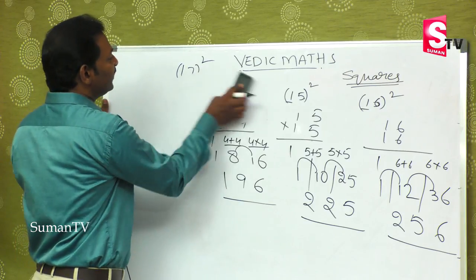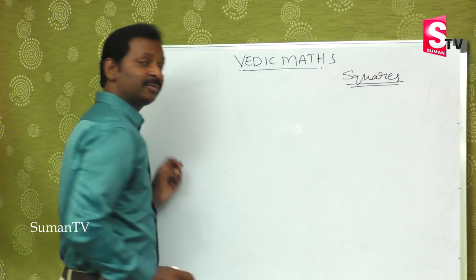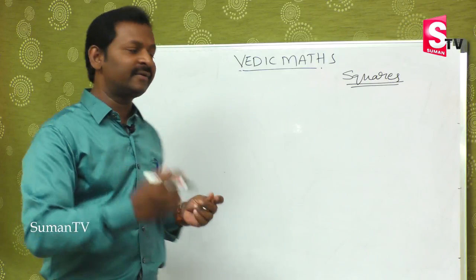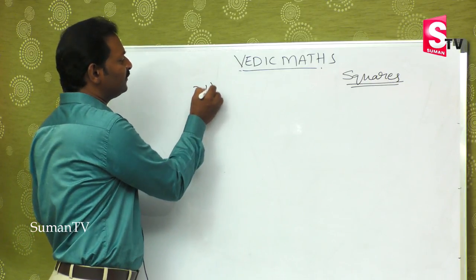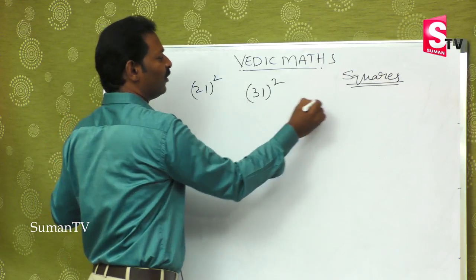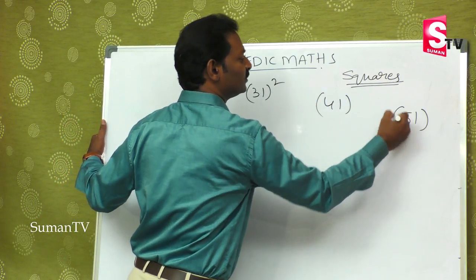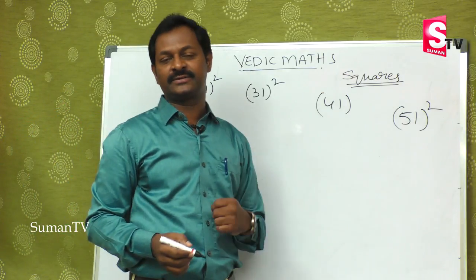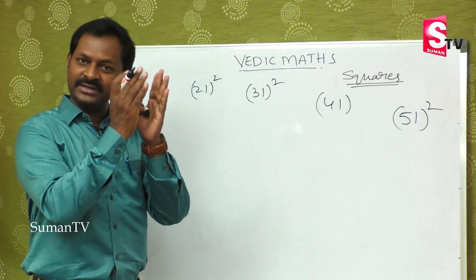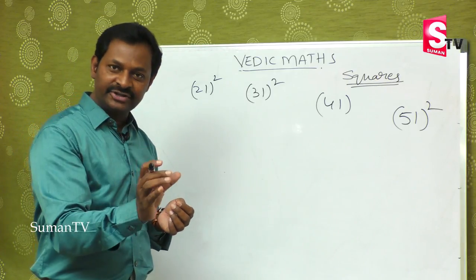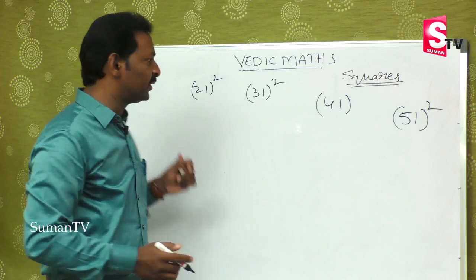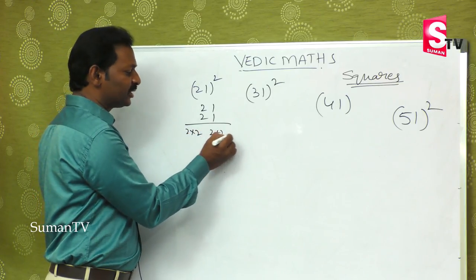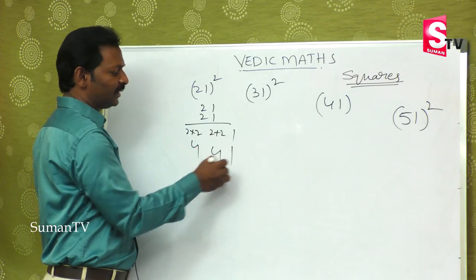Now for reverse numbers — 11, 12, 13, 14, 15, 16, 17, 18, 19 reversed give us 21, 31, 41, 51 and so on. The method reverses: for numbers ending with 1, we first multiply, then add, then write 1. For 21 into 21: first multiply 2 into 2 is 4, then add 2 plus 2 is 4, then 1. Answer is 441. For 31 into 31: 3 into 3 is 9, 3 plus 3 is 6, then 1. Answer is 961.